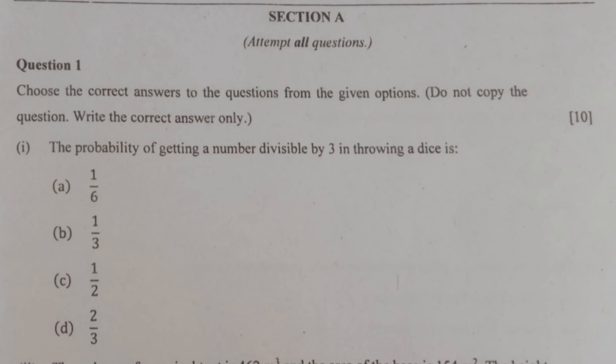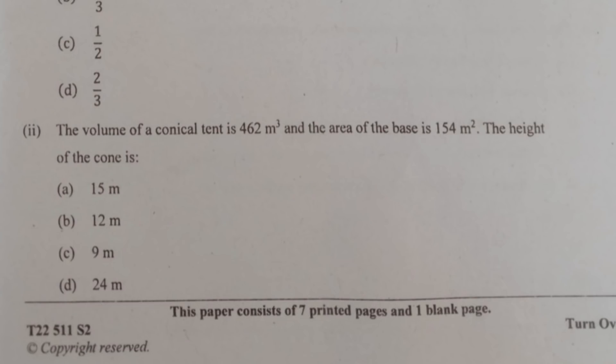The MCQs: choose the correct answers to the following questions from the options. Do not copy the question, only write the correct answer. Question 1: The probability of getting a number divisible by 3 in throwing a dice is, the correct option is B, 1 by 3. Question 2: The volume of a conical tent is 462 cubic meters and the area of the base is 154 square meters. The height of the cone is, the correct option is C, 9 meters.